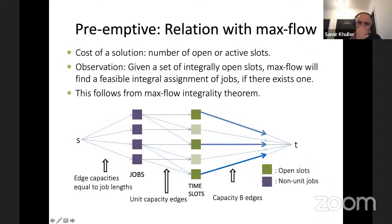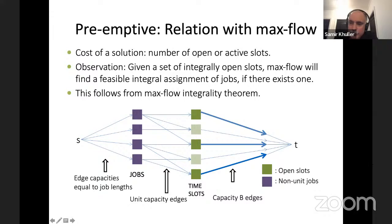Now, what is the relationship with certain combinatorial problems? I mentioned a relationship with max flow in the abstract. How many of you are familiar with the max flow problem? This part of the talk might not make sense if you've never seen max flow before.